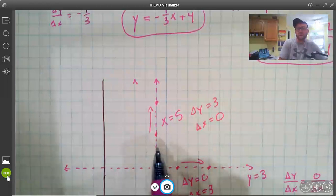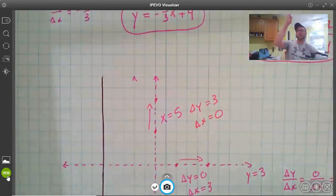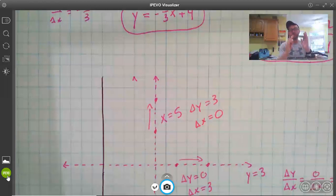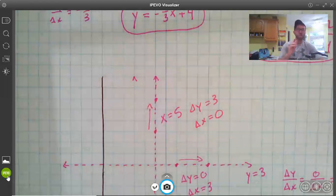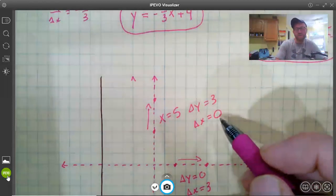Change in x is how far left or right do we move? Well if we're going straight up or straight down, our left-right movement is going to be 0, always 0. It doesn't move to the left, it doesn't move to the right, just straight up or down, there's no change in x, so change in x is 0.